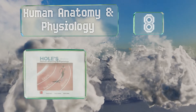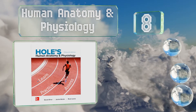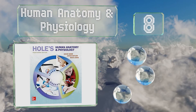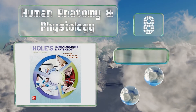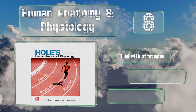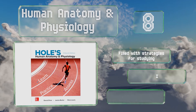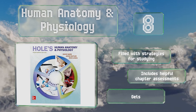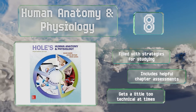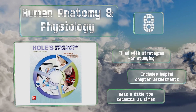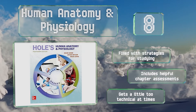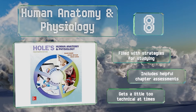Coming in at number eight, Hole's 15th edition of Human Anatomy and Physiology is a sound choice for anyone looking for an easily digestible way to begin learning about the mechanics of the body and the human life cycle. It was created for the introductory-level student and assumes no prior knowledge. It's filled with strategies for studying and includes helpful chapter assessments. However, it gets a little too technical at times.